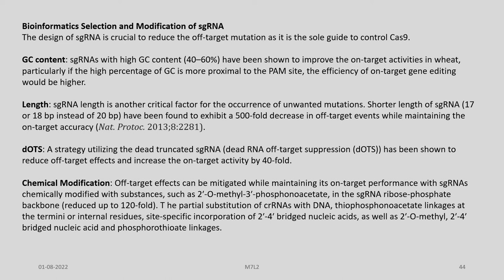The length of single guide RNA is another critical factor for the occurrence of unwanted mutations. Shorter sgRNAs of 17 to 18 base pairs instead of 20 have been found to exhibit a 500-fold decrease in off-target events while maintaining on-target performance. A strategy utilizing the dead truncated single guide RNA — dead RNA off-target suppression (DOTS) — has been shown to reduce off-target effects and increase on-target activity by 40-fold.